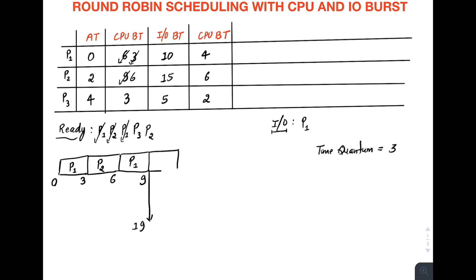Now we have P3. Its CPU burst time is three and the maximum you can give is three, so give it all the time from 9 to 12. P3 is done and will go for I/O from 12 to 17 (12 + 5 = 17). P3 is removed from the ready queue and placed in the waiting/I/O state.